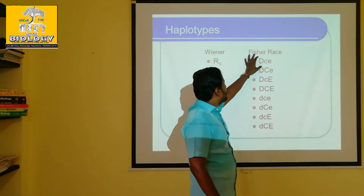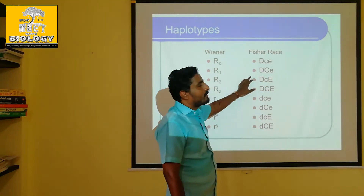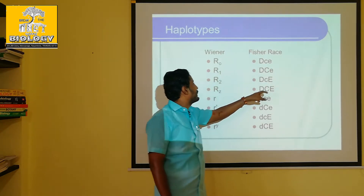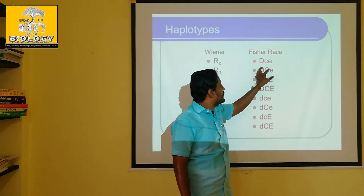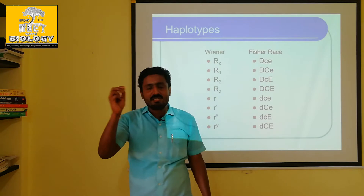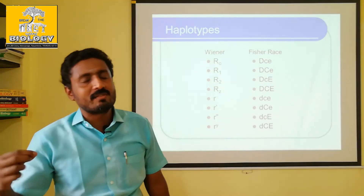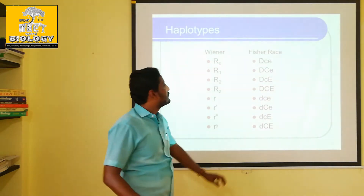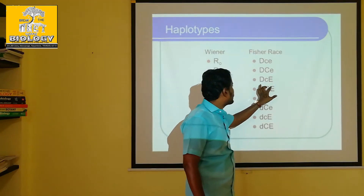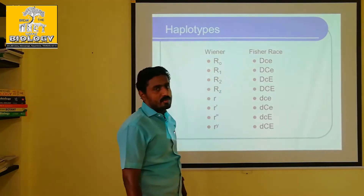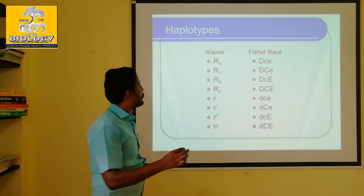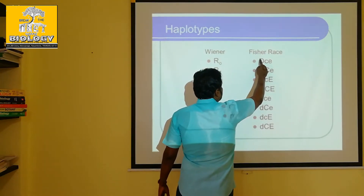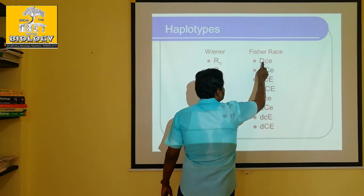If we read these letters, we have a little confusion. We have a D, and we have three loci — those are known as loci. This is the case of Venus. If we read this, we have three letters. The Fischer and Reiss system has three letters.